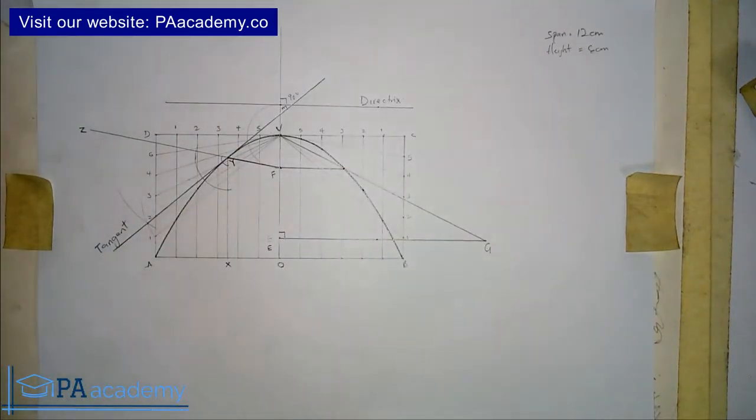Now we've got the tangent. So this is how you are going to do it when you are asked to draw a tangent to a parabola. Now, that is for tangent. What if you want to now draw a normal? A normal. And don't forget, a normal is always at 90 degrees to a tangent. You know, they are always perpendicular.